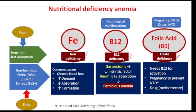Iron deficiency anemia is mainly caused by blood loss, increased demand due to pregnancy, or decreased absorption from the GI system due to malabsorption, or increased formation of red blood cells. B12 deficiency may occur in patients after gastrectomy — after removal of part of the stomach — the patient may suffer from decreased secretion of intrinsic factors, which are very important for absorption of B12. Therefore, patients suffer from impaired absorption of B12, a condition called pernicious anemia.